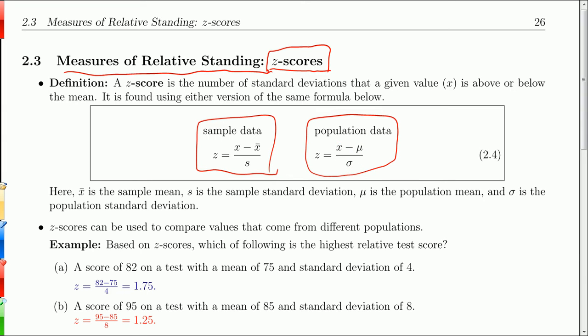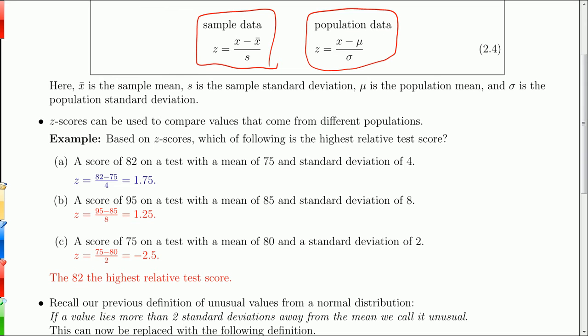Moving on to how we can use these. One example of how we can use z-scores is if you wanted to compare values from different populations. For example, here I'm going to give the value of three different tests taken by three different students in three different classes, where the means and standard deviation of the class test change. And you want to see which score is the best.